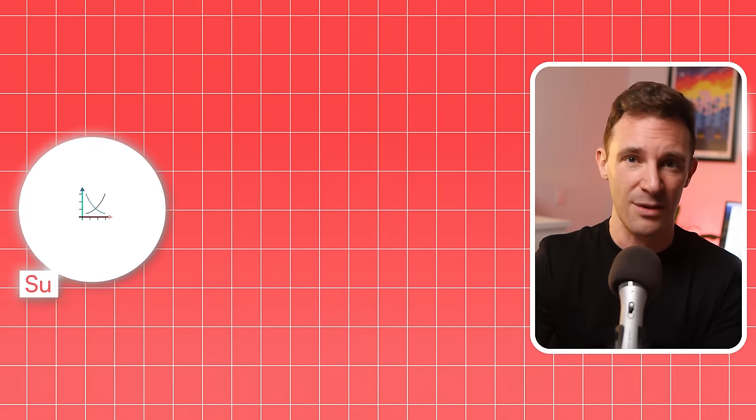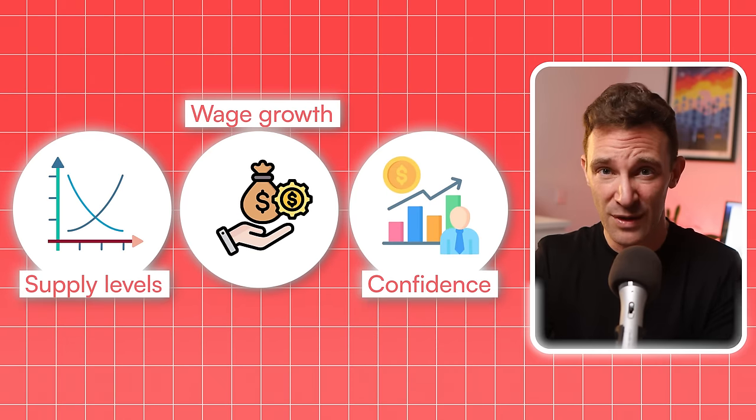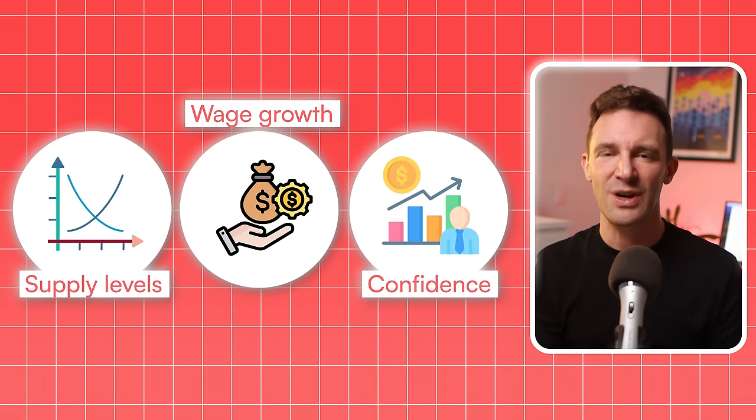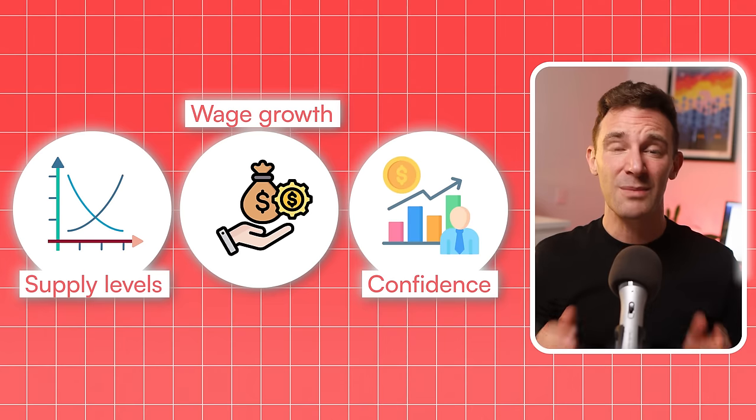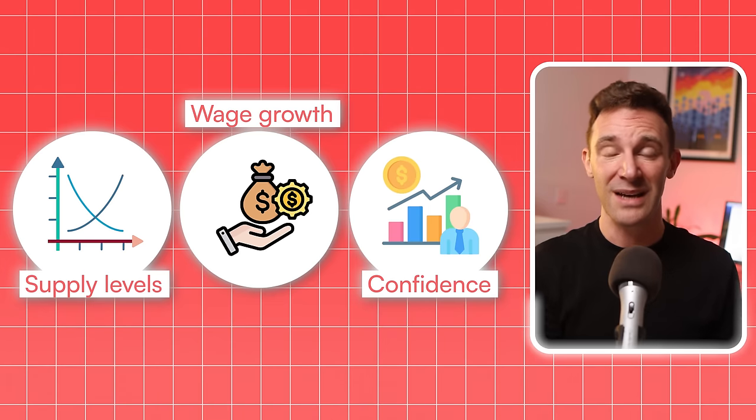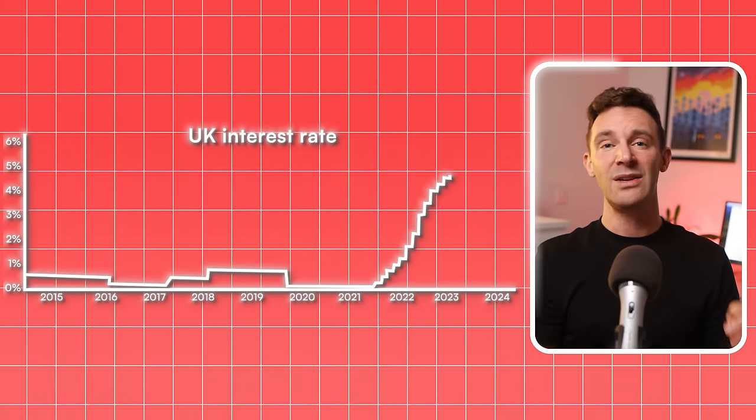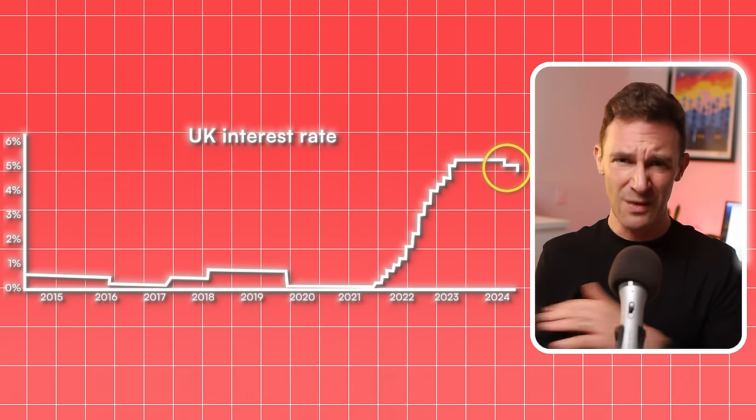This is where it gets tempting to throw your economics textbooks out of the window. And I can tell you from conversations I've had with investors around the country, this resilience in house prices has caught a lot of people by surprise. But when you look deeper, you start to understand why. There are actually dozens of other factors at play. Things like supply levels, wage growth, and even broader economic confidence. All of these can push and pull on prices in different directions, sometimes completely offsetting the effect you'd expect interest rates to have. But now, interest rates aren't increasing anymore. They're on their way down. And once again, that's not necessarily having the effect that you think it should, in particular when it comes to mortgage rates.